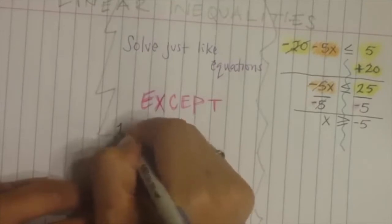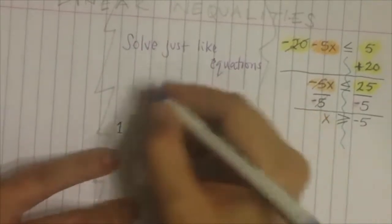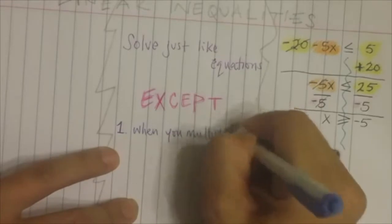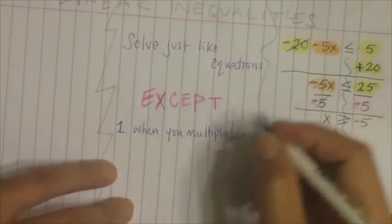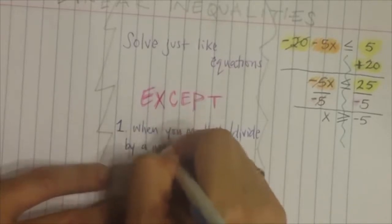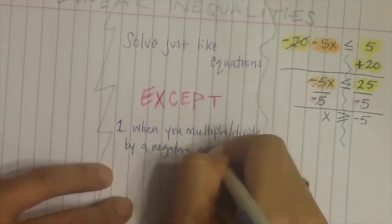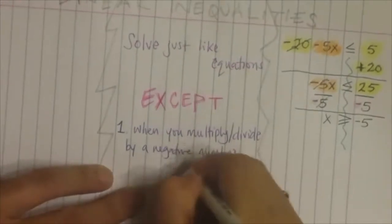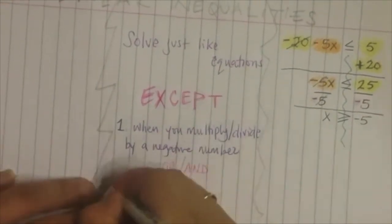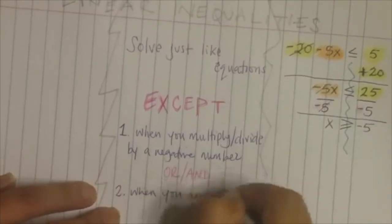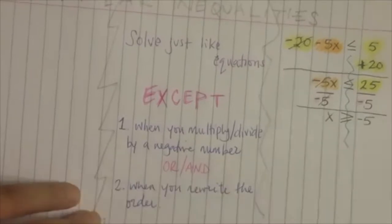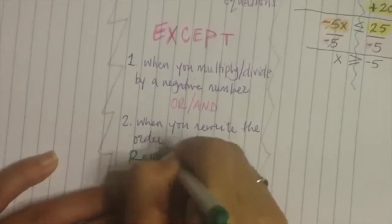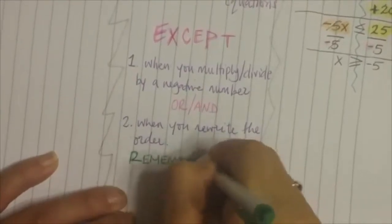This is a listening check — underline the word 'solve.' Rule one: when you multiply or divide by a negative number, you must flip the inequality. Rule two: when you rewrite the order. You solve just like regular equations except when you multiply or divide by a negative number or rewrite the order.